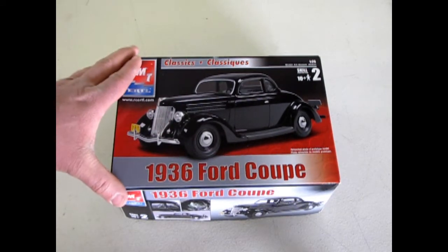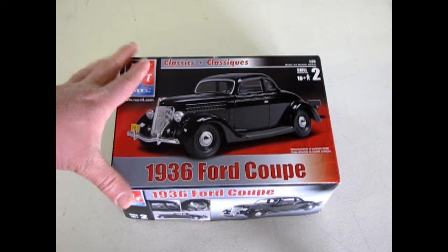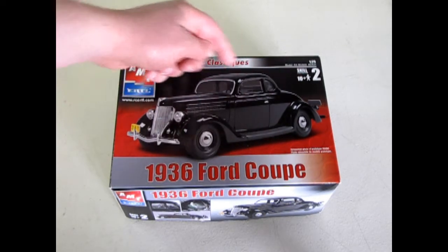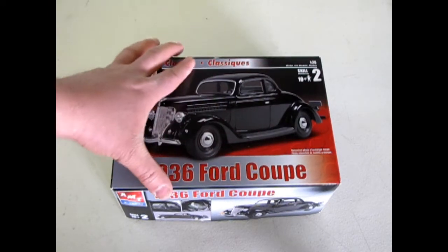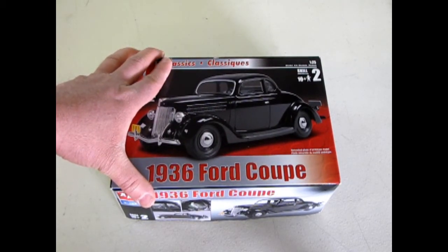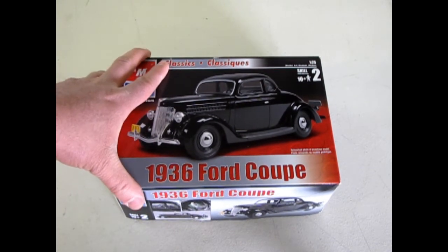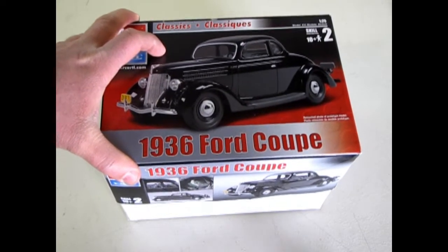This kit has been reissued many many times and it's actually been modified. The original kit was a three-window coupe and had a removable roof and separate windshield and a convertible boot so you could make it as a convertible or a three-window coupe. The five-window came out when the Dick Tracy movie in the 90s came out. And now let's see what's in the box.